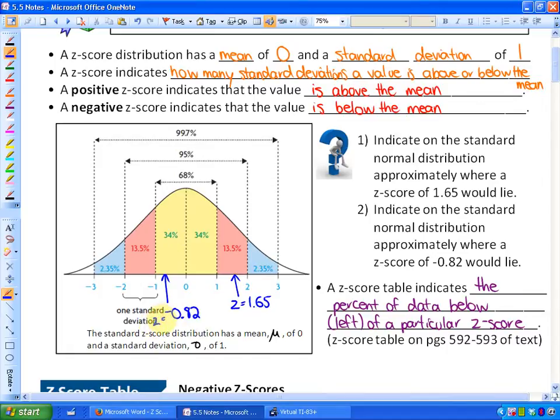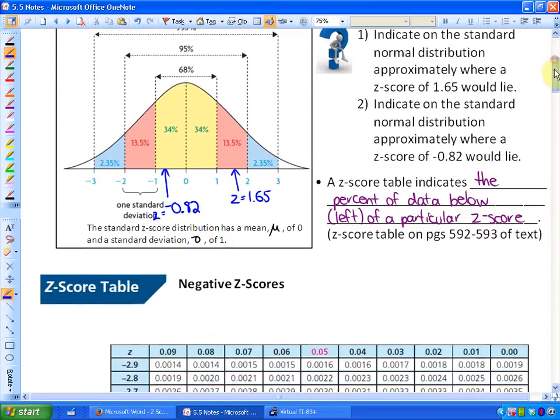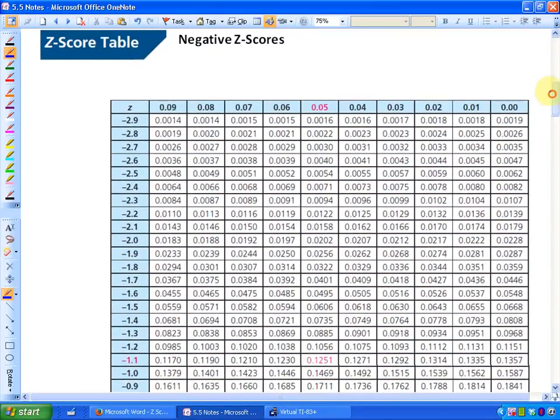What we're going to look at next is what a Z-score table is. A Z-score table indicates the percent of data below or left of a particular Z-score. You'll see the usefulness of this as we can standardize different data. Let me show you what the table looks like. It looks like just a huge, long list. I'll describe to you what it means in a bit.